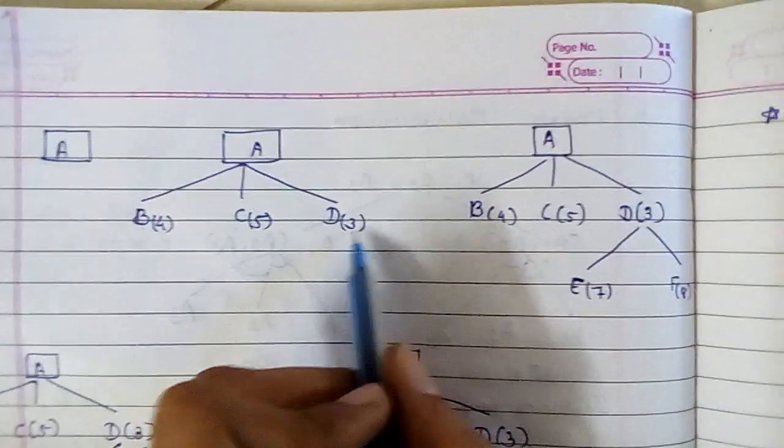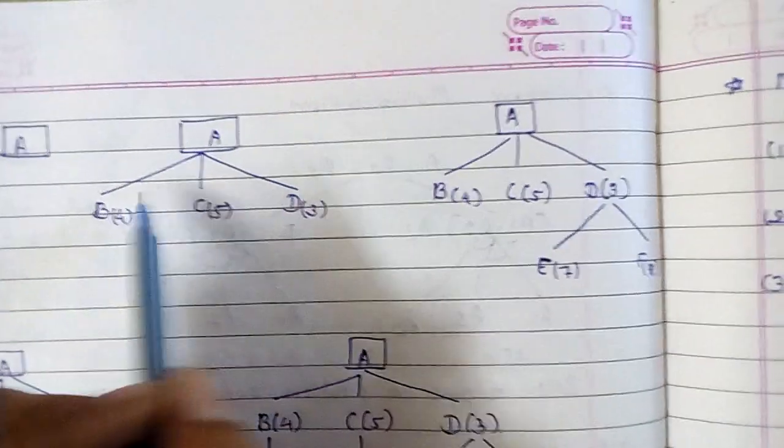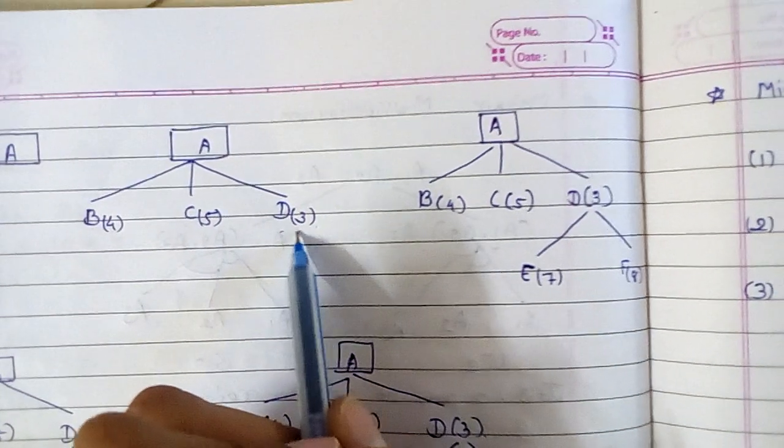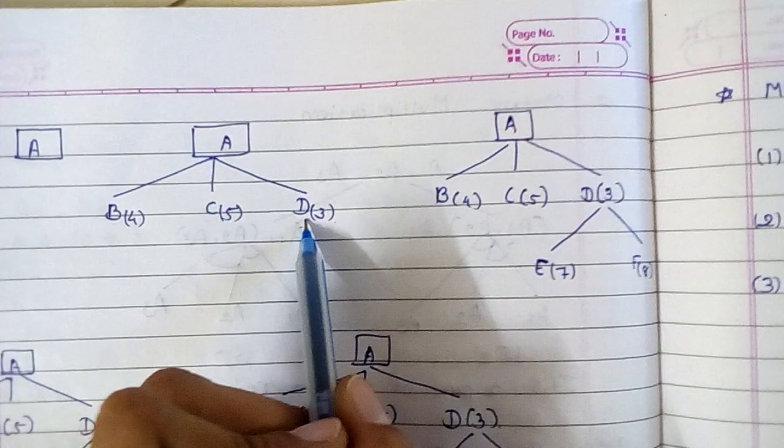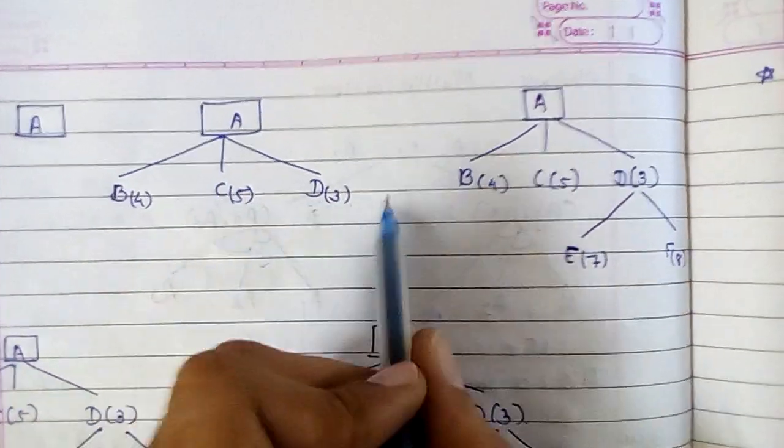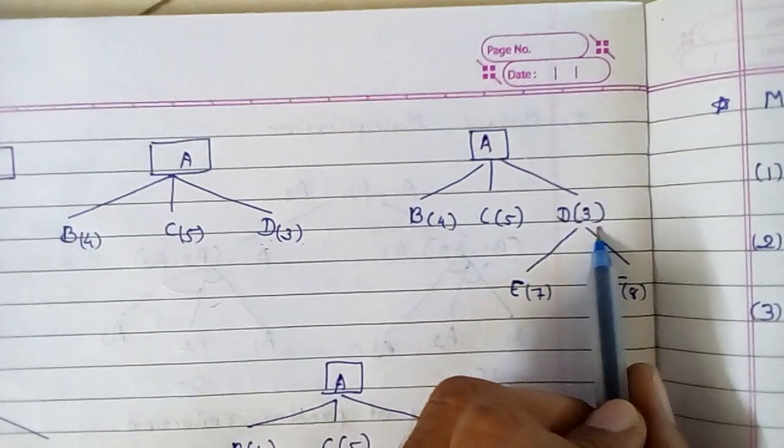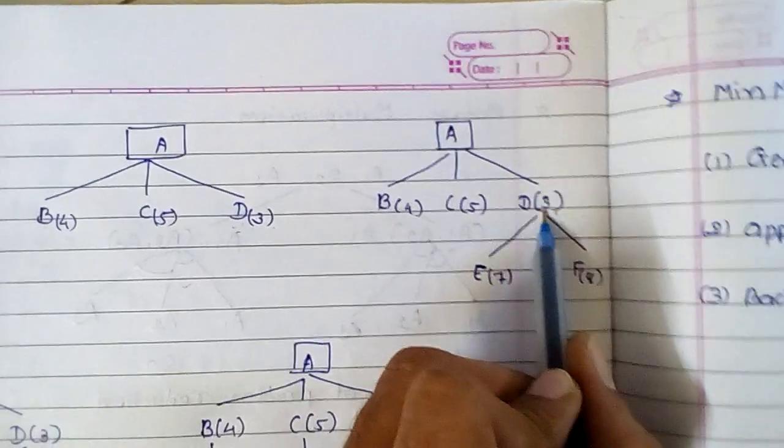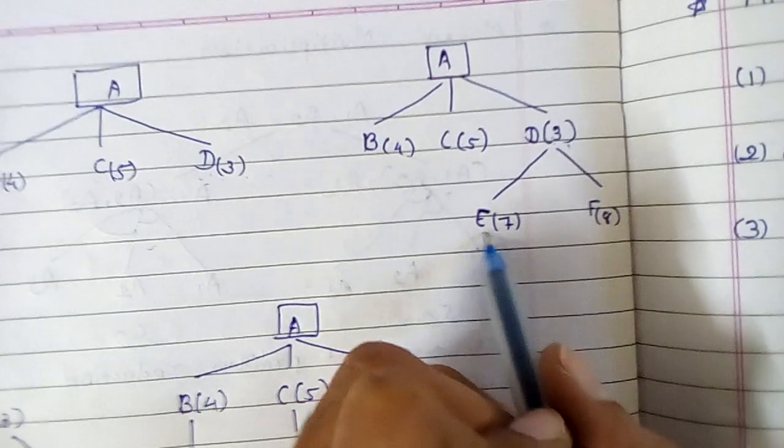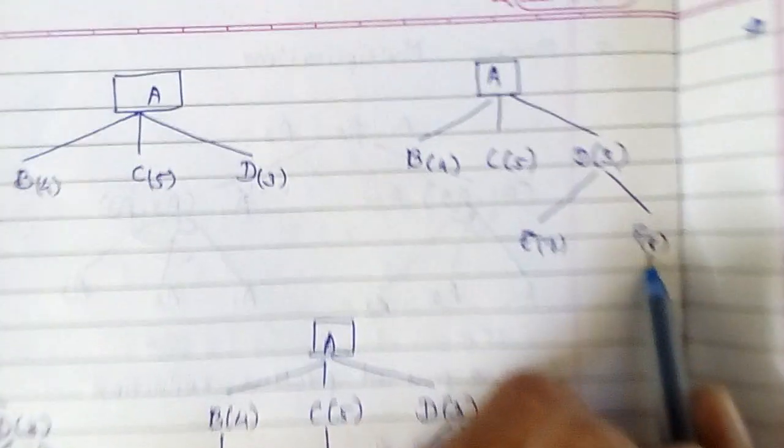Now apply the heuristic function and get the value of each child node. B is giving me 4, C is giving me 5, and D is giving me 3. Now find out the minimum and generate its child node. D is giving me the minimum, that is 3, so I am generating children of D, that is E and F.